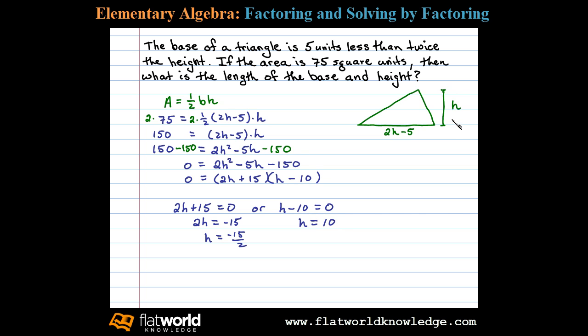Now, since h represents the height of the triangle, we'll disregard this negative solution, and we'll consider h equals 10 units to be the only solution here. Now, to determine the base, we'll back substitute into 2h minus 5. Here we get 2 times 10 minus 5, or 20 minus 5, which equals 15 units.